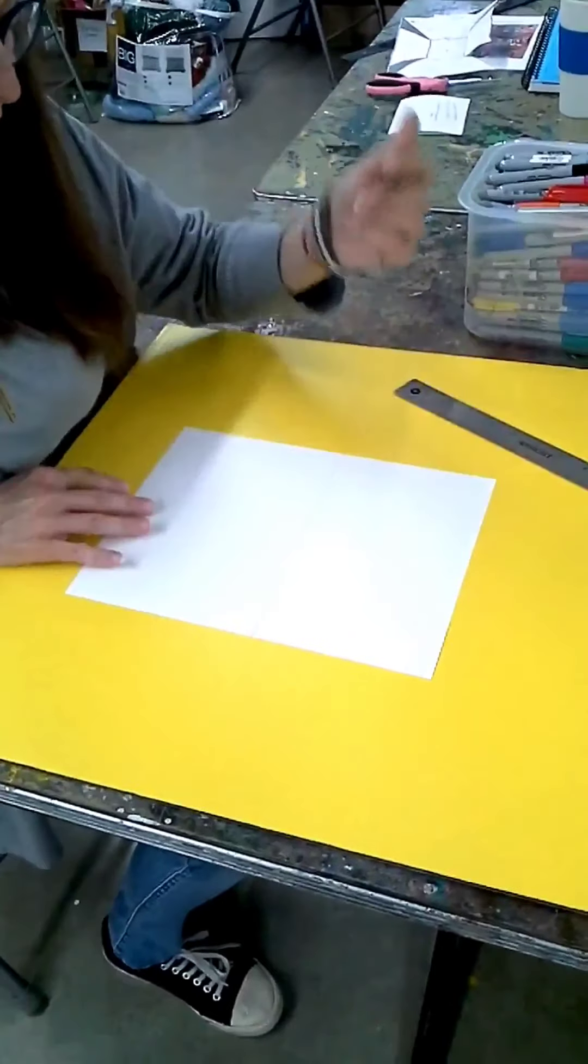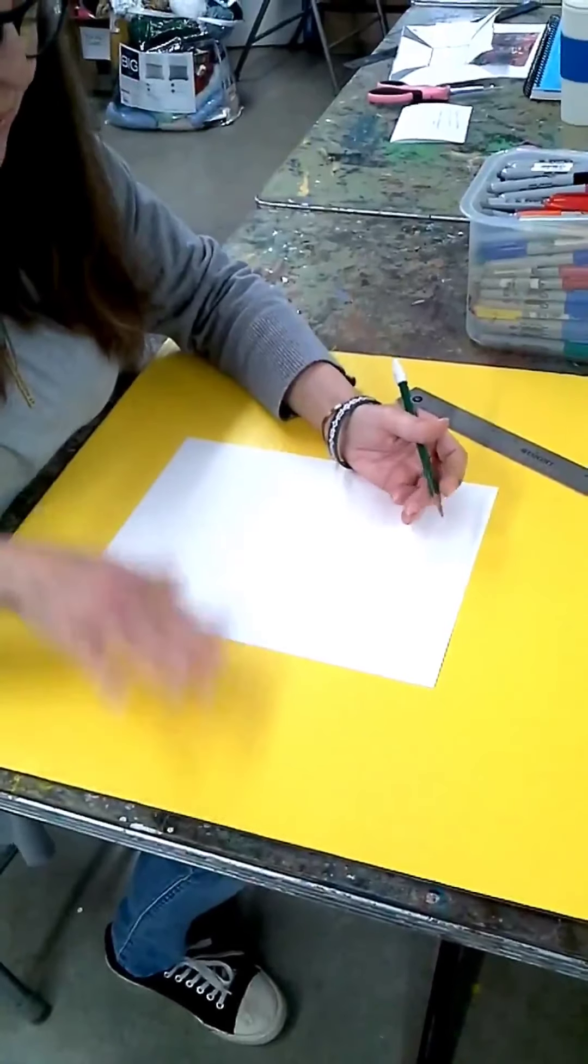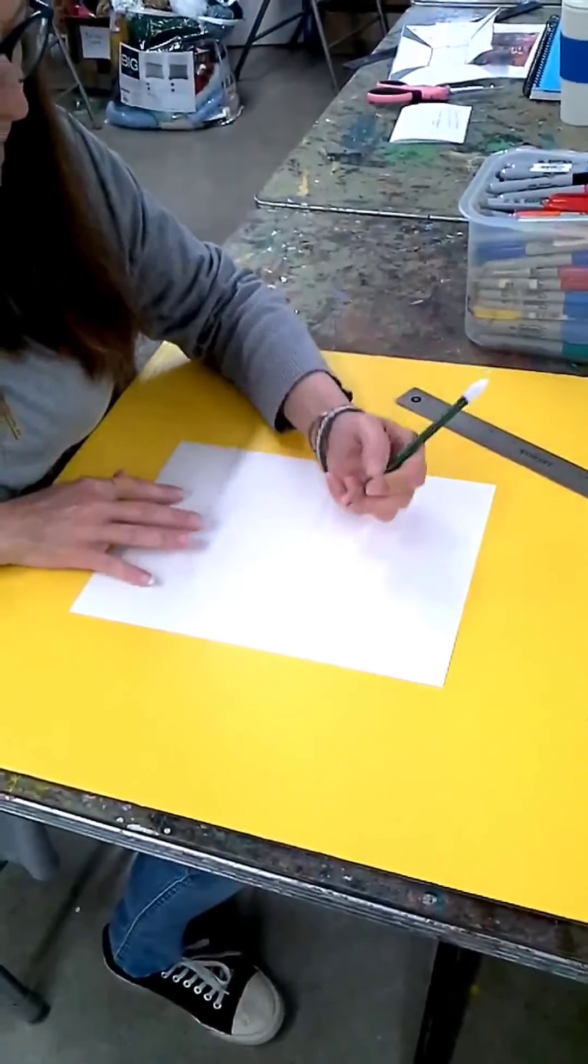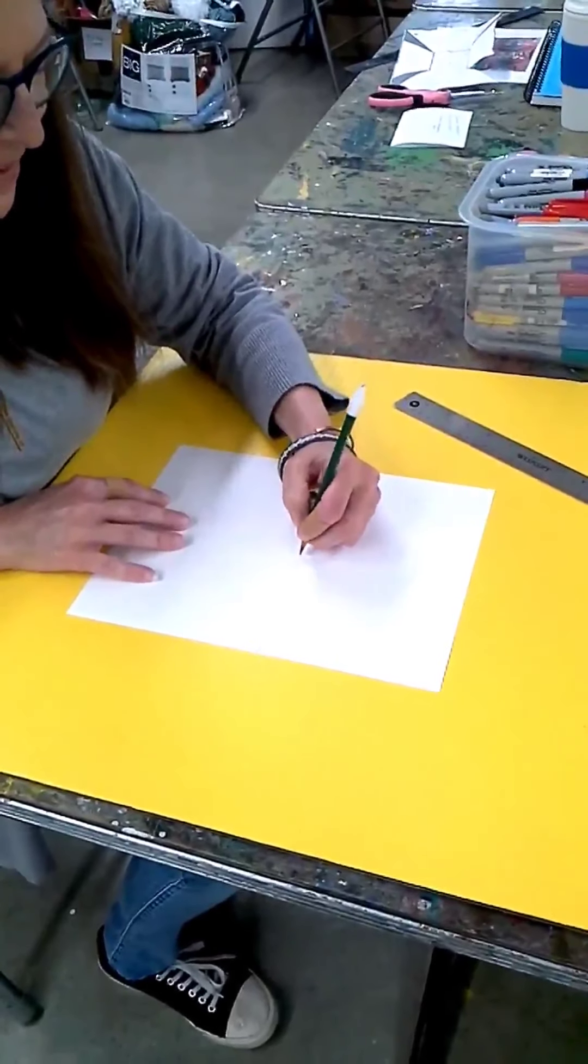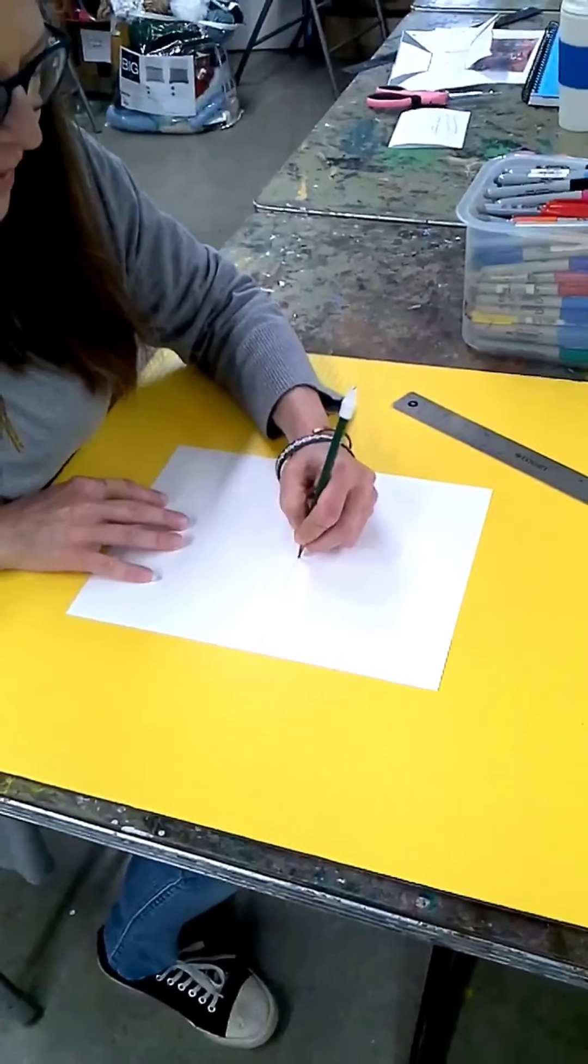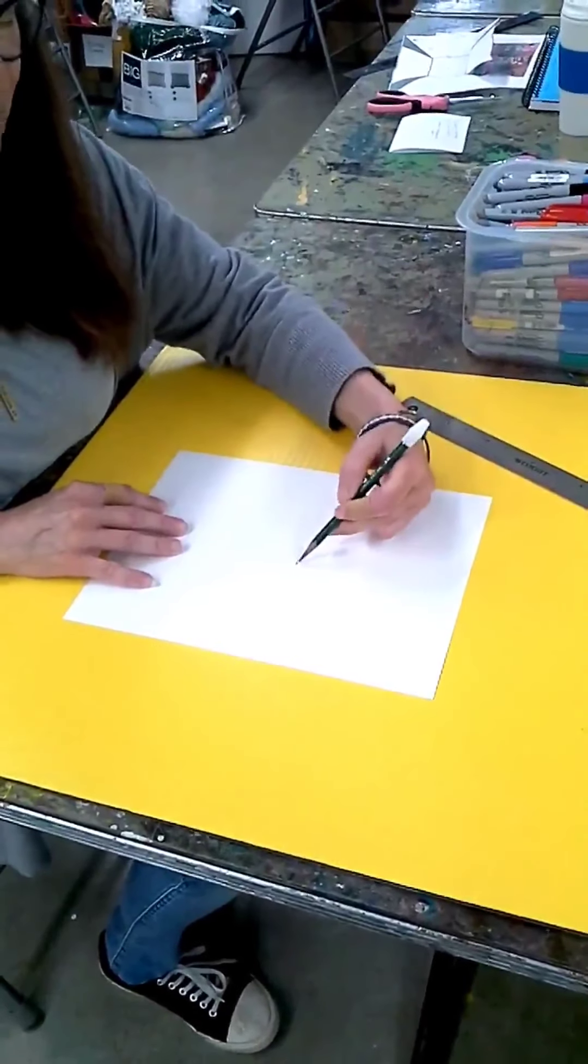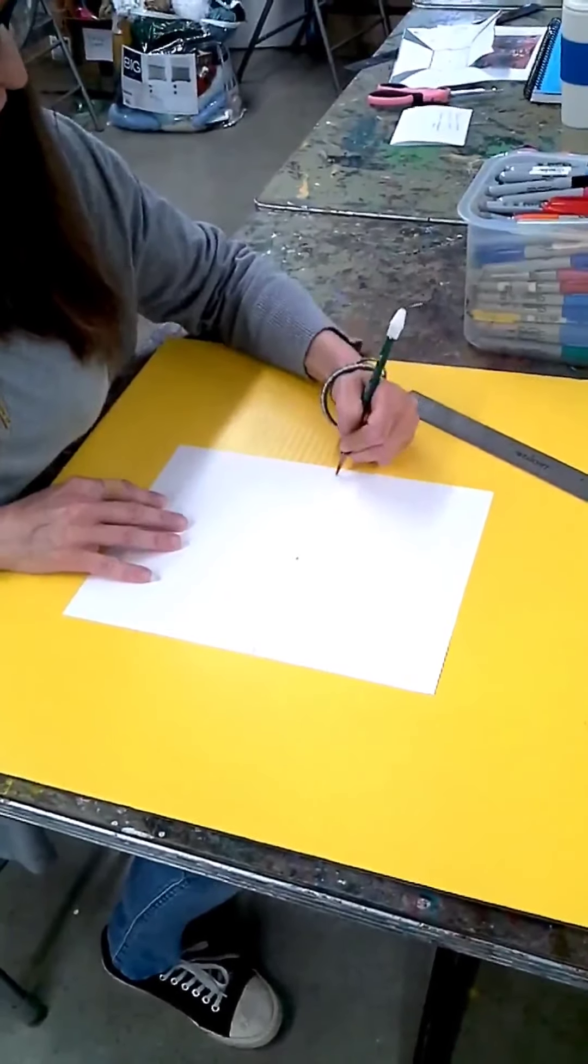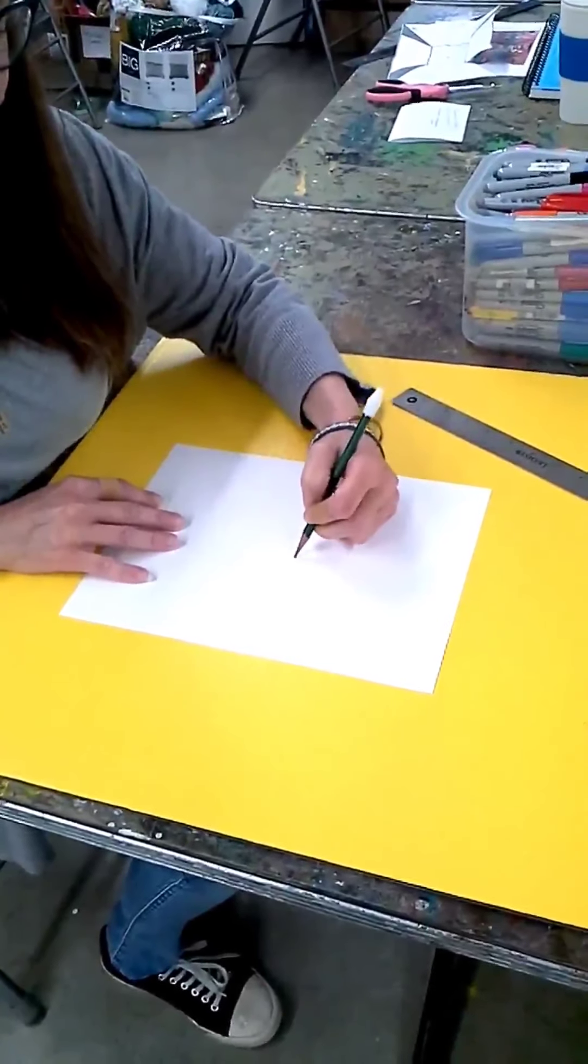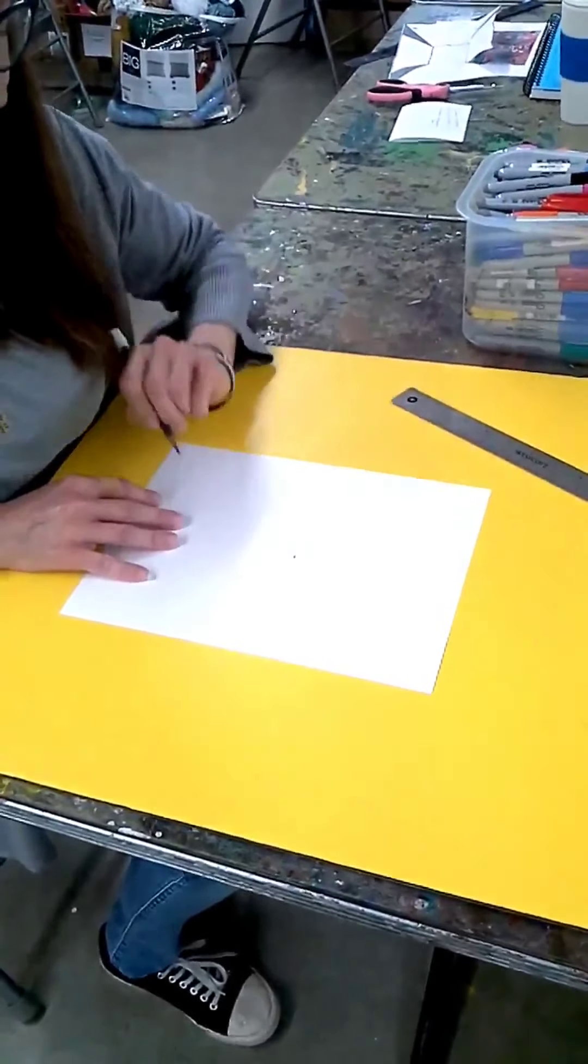And then I'm going to draw my perspective dot. It can be anywhere on your horizontal line. It could be over here or over there, but I'm choosing it. It's going to be right there.